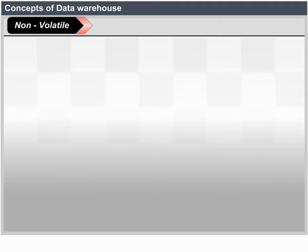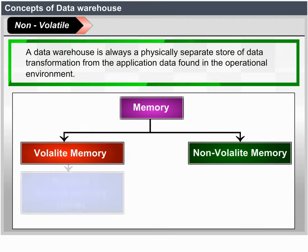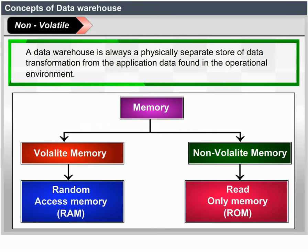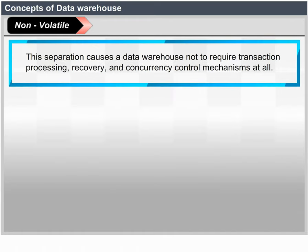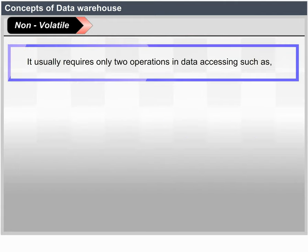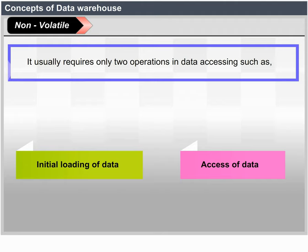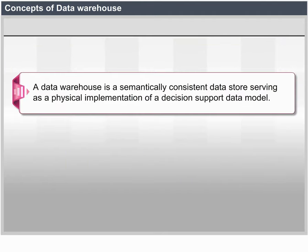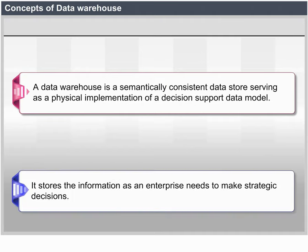Non-volatile: A data warehouse is always a physically separate store of data transformed from the application data found in the operational environment. Due to this separation, a data warehouse does not require transaction processing, recovery and concurrency control mechanisms. It usually requires only two operations in data accessing: initial loading of data and access of data. A data warehouse is a semantically consistent data store that serves as a physical implementation of a decision support data model, storing the information an enterprise needs to make strategic decisions.